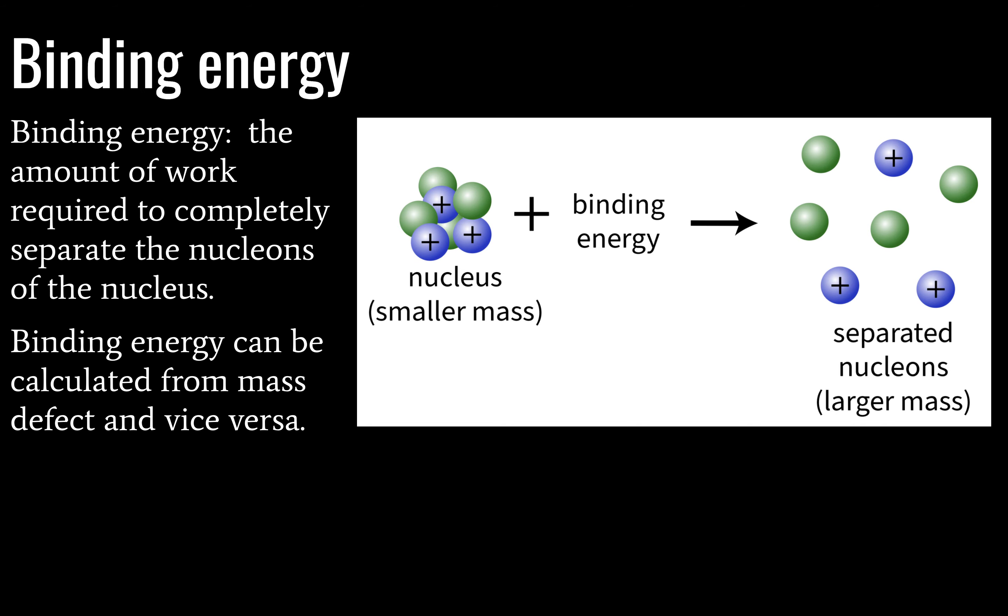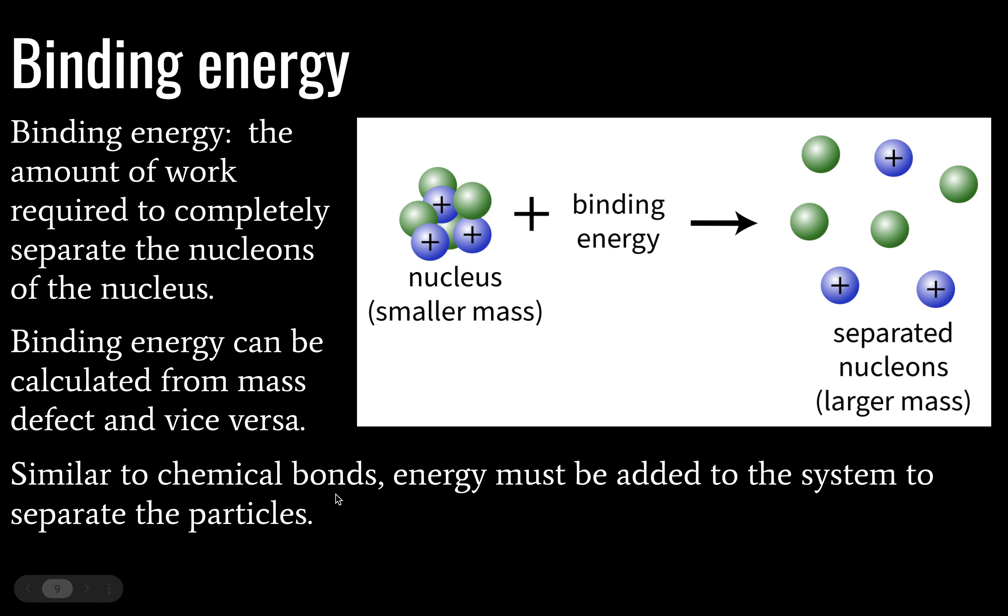Binding energy is just the amount of work required to completely separate the nucleons from the nucleus. Here we have a nucleus, and to this we add energy. And when we add energy to this system, we can now pull apart our nuclei. One way to think about this is a situation where you have a bunch of little magnets stuck together. It's not a perfect analogy, but bear with me. When you pull magnets apart, you do that by applying a force. You do work. Well, it's the same with chemical bonds, and in this case, nuclear bonds. In order to separate our particles, we have to add energy, just as if we were pulling apart magnets.